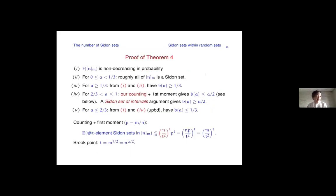Let me say a little about the proof. Since I started with counting and said the motivation was to use counting to prove this theorem, let me focus on the counting part. The crucial point involves the range where a is between two thirds and one.